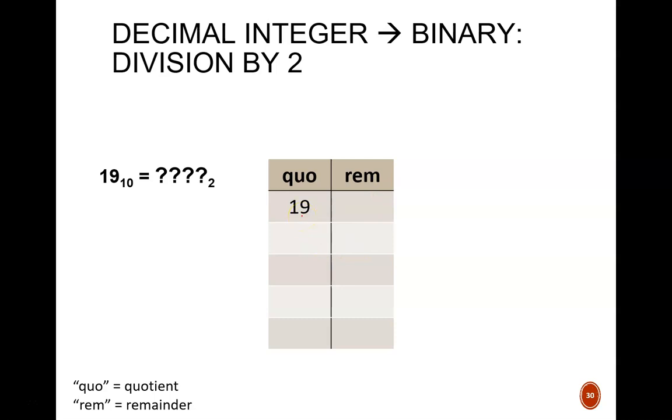Now, we take this number 19 and divide it by 2. The result of this is a quotient of 9 with a remainder of 1. So, I write those numbers in these slots. Again, quotient of 9 and a remainder of 1. And, from there, we just continue this pattern of dividing the quotient by 2.